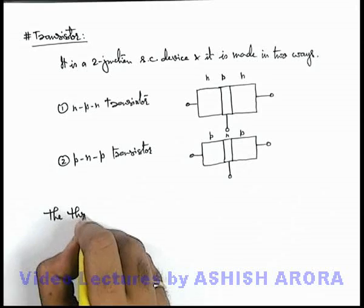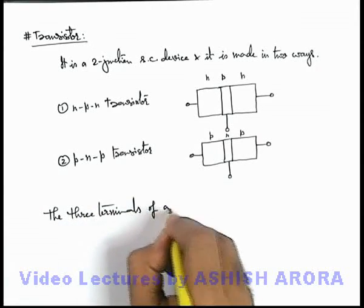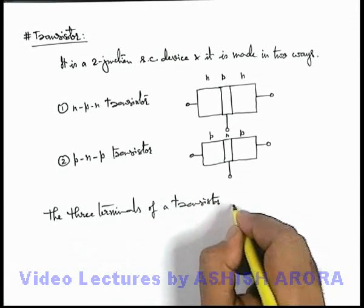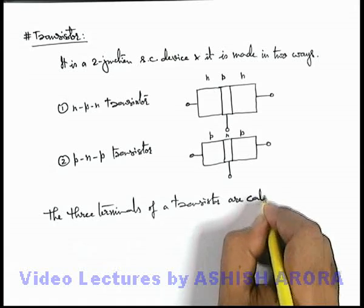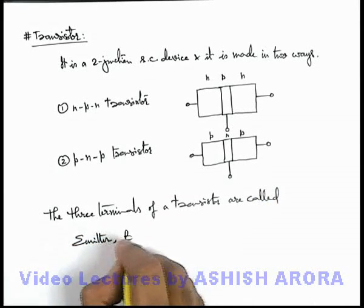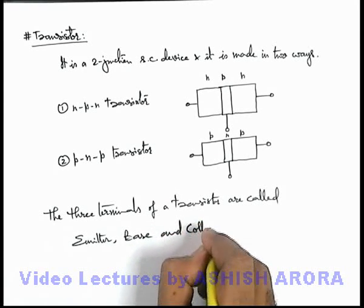And we can also write that the three terminals of a transistor are called emitter, base, and collector.